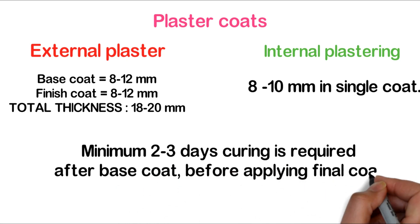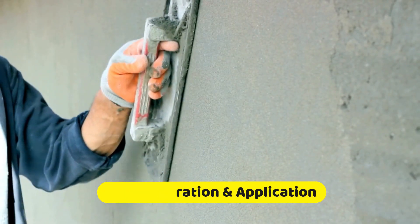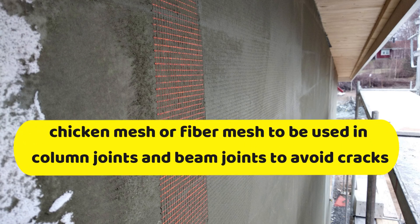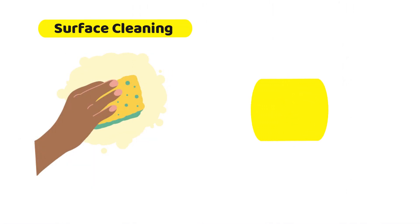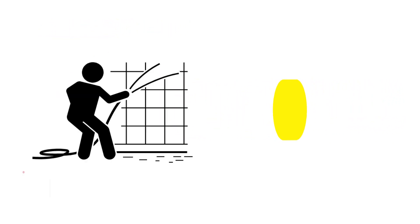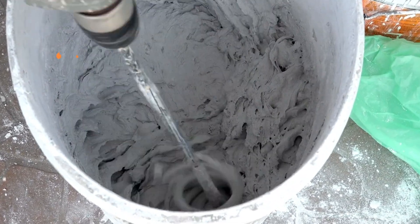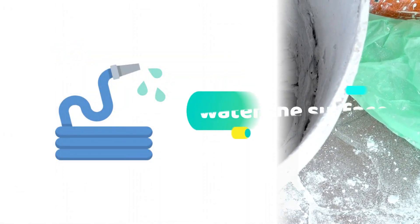The site preparation and application methodology of ready mix plaster: Chicken mesh or fiber mesh has to be fixed in column joints and beam joints to avoid cracks. The surface should be free from oil, grease, paint, loose plaster, dirt, etc. Wet the wall before application of ready mix plaster. The plaster has to be mixed with water as per manufacturer's mixing proportions. Then wet the surface and apply the plaster.